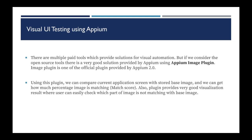We have multiple paid tools available in the market for visual UI testing, but if we consider open source tools, there is a very good solution provided by Appium using the Appium image plugin. This image plugin is one of the official plugins provided by Appium 2.0 — it is not available in Appium 1. Using this plugin, we can compare the current application screen with a baseline image and get a match score indicating how much percentage the image is matching.